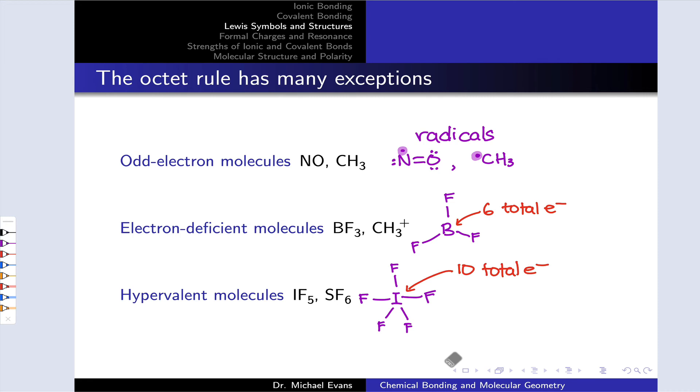So 10 around the iodine and in fact, 12 around the sulfur in SF6. Hypervalent molecules are more common than you might at first believe.